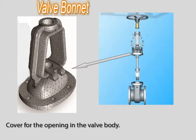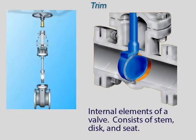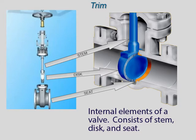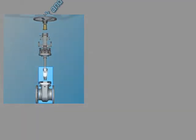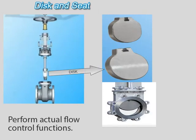The bonnet is the second principle pressure boundary of a valve. It is cast or forged to the same material as the body and is connected to the body. The internal elements of a valve are collectively referred to as the valve trim. This is the portion of the valve that moves and controls flow. The elements that make up the trim are the disc, seat, and stem. The disc and seat perform the actual flow control functions of the valve. The disc has a machined seating surface that meets with the valve seat to provide a positive seal when the valve is closed.